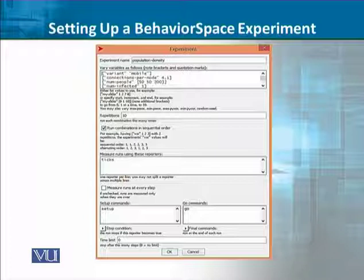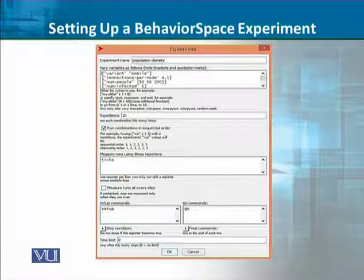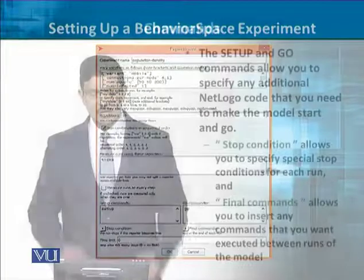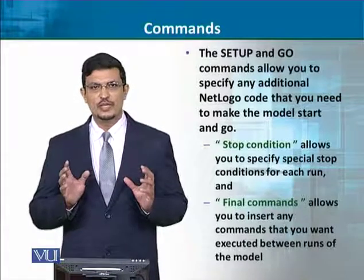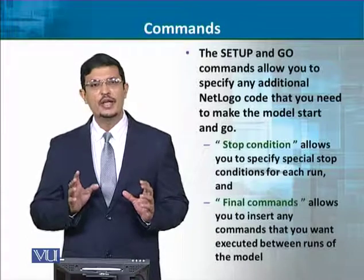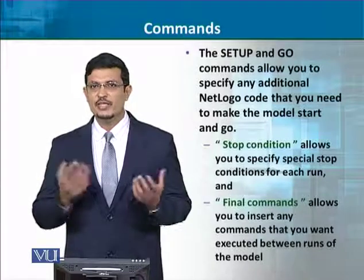The population varies: 50, then 50 to 100, then 150, and finally 200. Number of infected is 1. The only thing that varies is the number of people, with every simulation run 10 times sequentially. The measurement is in ticks, and this is saved. So we have two experiments of simulation.